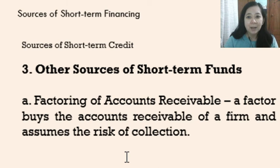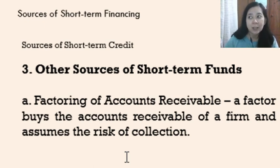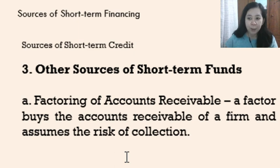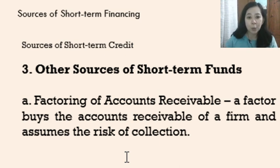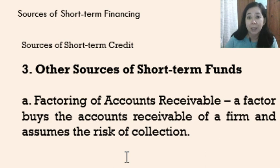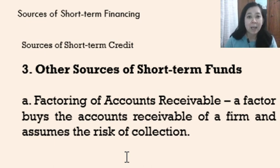The third source of short-term funds is factoring of accounts receivable. A factor is a third party that buys your accounts receivable and assumes the risk of collection. For example, if you have a bank loan, you can use your accounts receivable or inventory as collateral. If you cannot pay the loan, you can factor those receivables as payment. The risk of non-collection is transferred to the entity that factors your accounts receivable.